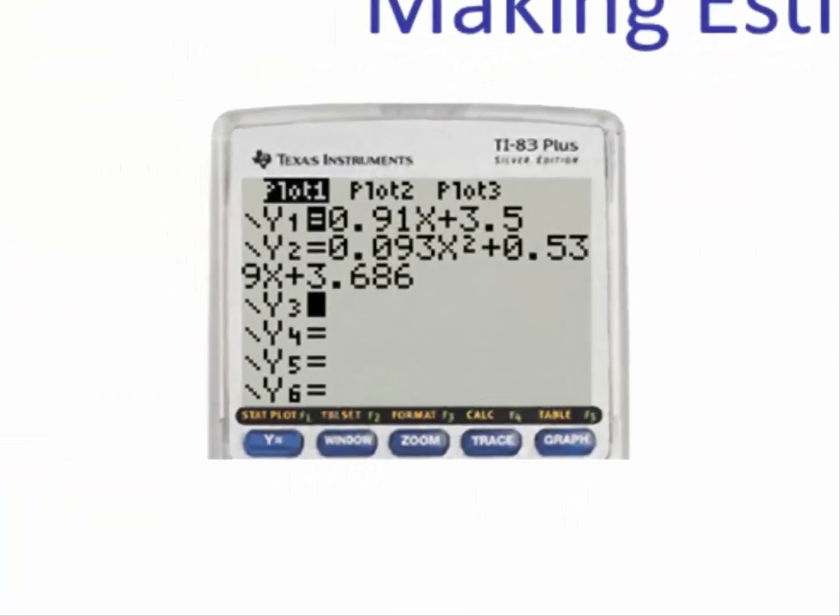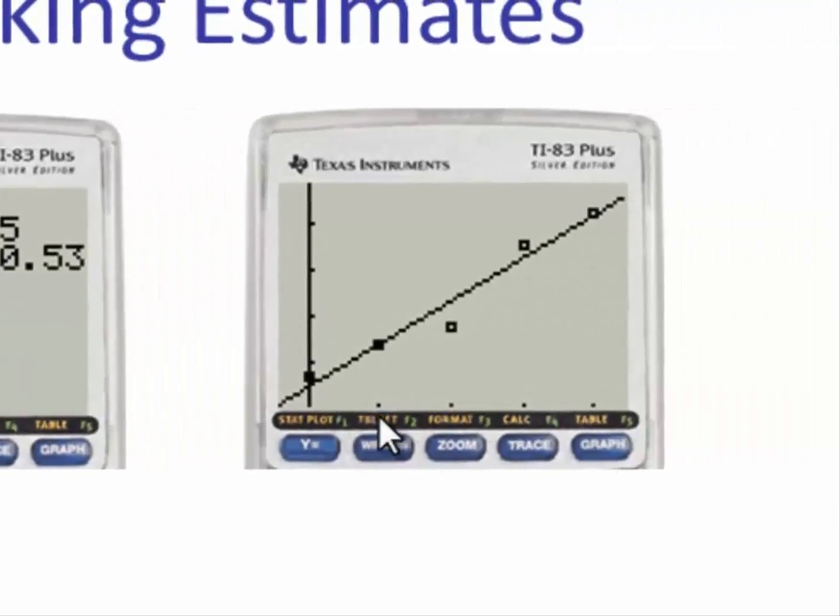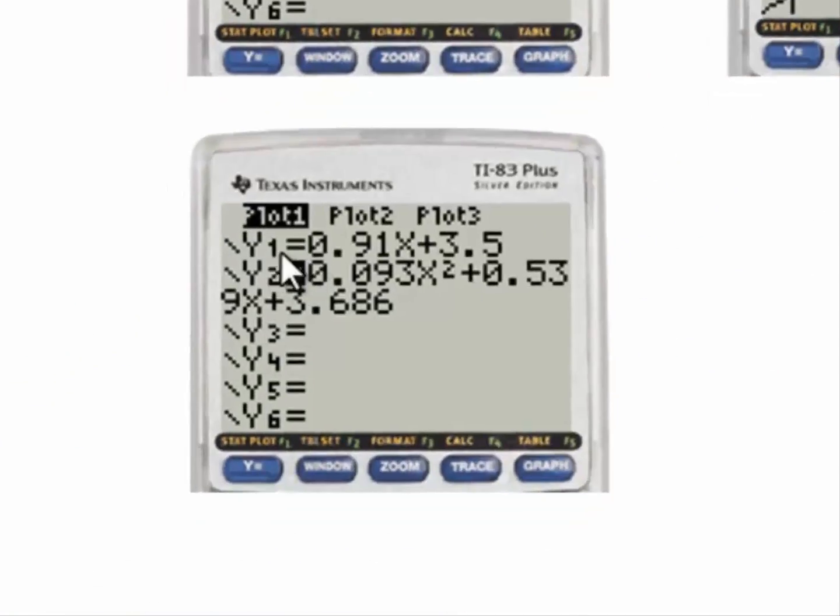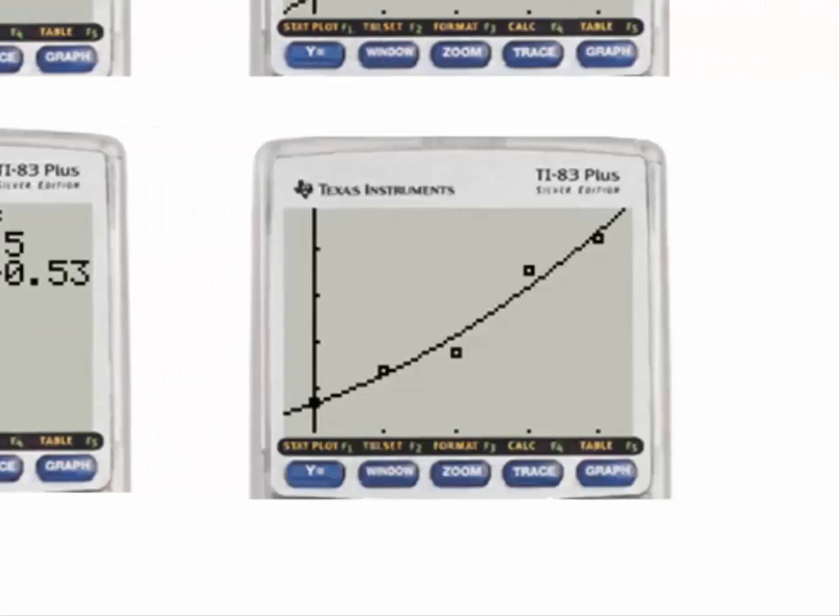To get a visual of both these regression models, I put the linear in Y1. Hitting graph, we see that the line is doing a pretty good job of modeling the data. Unselecting Y1 and typing the quadratic regression model in Y2, hitting graph, we see that the quadratic does a better job of modeling the data. So both visually from the scattergram and r squared, both are telling me that the quadratic is a better model.